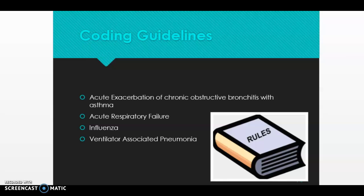Guideline B2 covers when to code acute respiratory failure as a secondary diagnosis. Respiratory failure may be listed as a secondary condition if it occurs after admission, or if it is present on admission but does not meet the definition of principal diagnosis. Just make some flashcards — there are seven guidelines altogether in this section, and the best way to master them is to memorize and apply them.